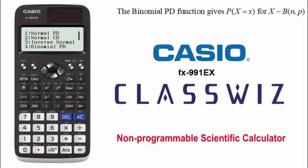Hi there. Now, in this video, what I want to do is introduce you to the binomial PD function on a Casio FX991EX ClassWiz calculator, as you can see here. The binomial PD function, or probability density function, gives us the probability that a random variable x equals an observed value x, when that random variable comes from a binomial model with n trials and p for the probability of success.